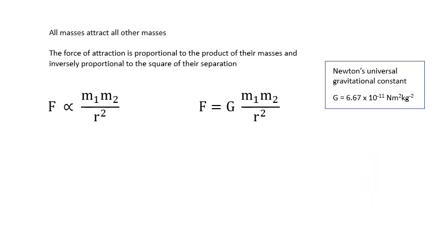Building on the work of other people, using the data from other people, Newton came up with his universal law of gravitation. And that is that all masses attract all other masses. The force of attraction is proportional to the product of their masses and inversely proportional to the square of their separation.